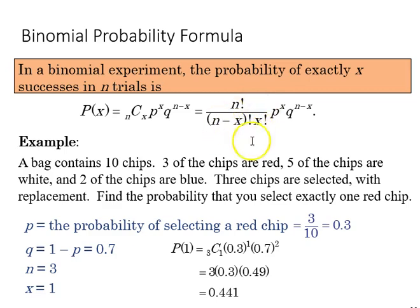Remember x indicates a success, and that is then multiplied by p raised to the x and q raised to the n minus x. With that formula we can calculate binomial probability.